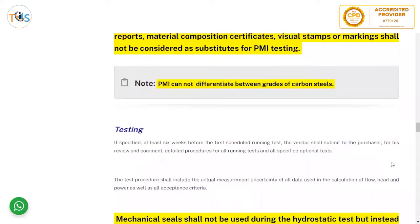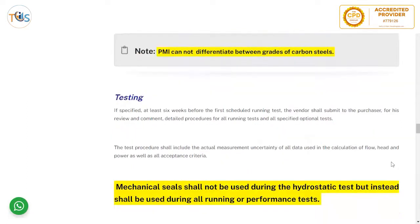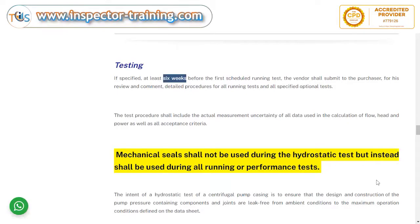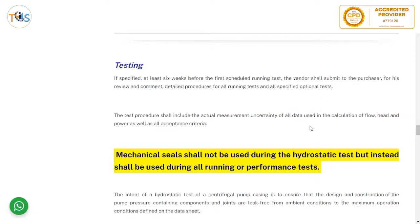PMI cannot differentiate between grades of carbon steel. At least six weeks before the first scheduled running test, the vendor shall submit to the purchaser details of all running tests and specified optional tests — this six-week requirement is common across all API standards. The test procedure shall include the actual measurement uncertainty of all data used in calculating flow, head, and power, as well as all acceptance criteria including guaranteed performance tolerances.